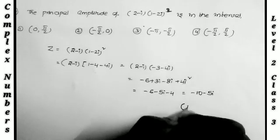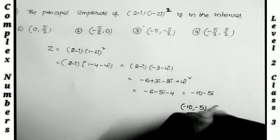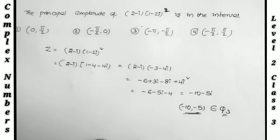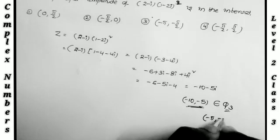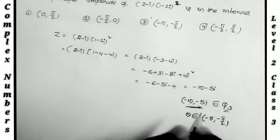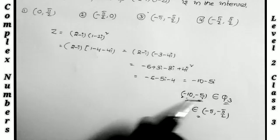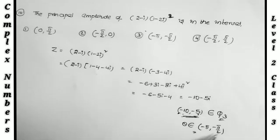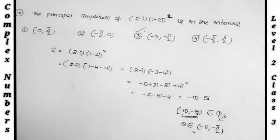The complex number is (-10, -5). Both real and imaginary parts are negative, so this lies in the third quadrant. The range of angles in the third quadrant is (-π, -π/2), and therefore the principal amplitude belongs to the interval (-π, -π/2), which matches the given option.